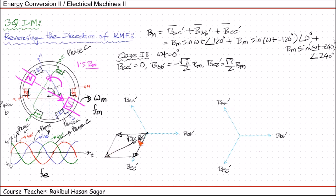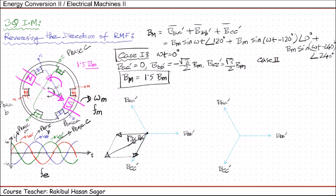Drawing the resultant vector, the net magnetic field equals 1.5 B_M. Now we consider Case 2, for ωt = 30°.